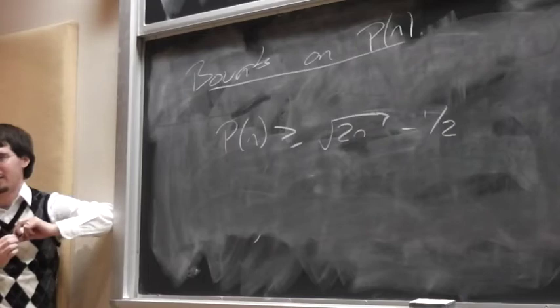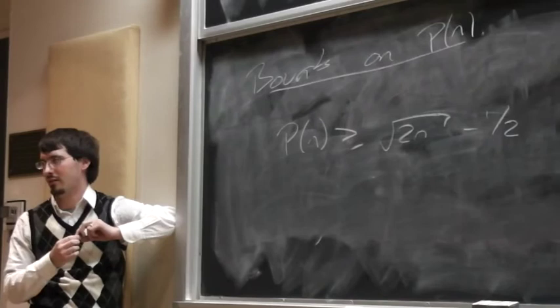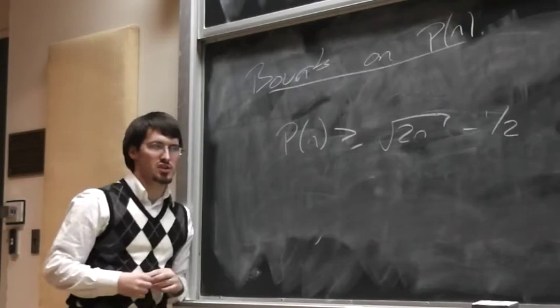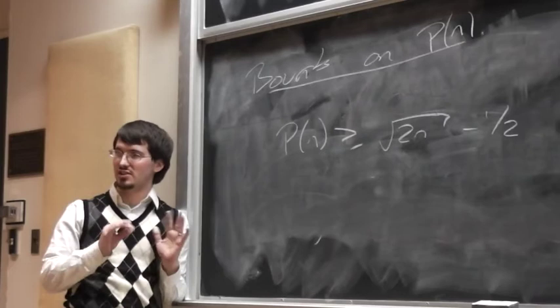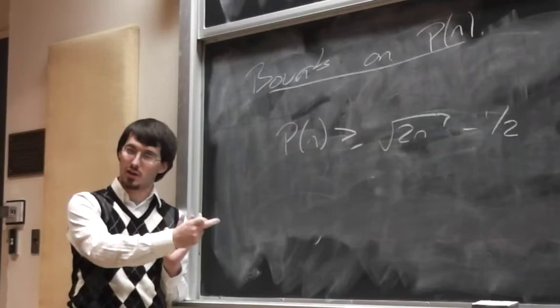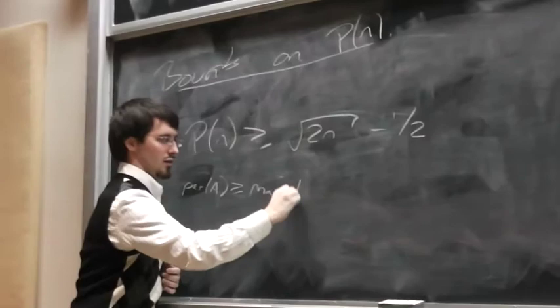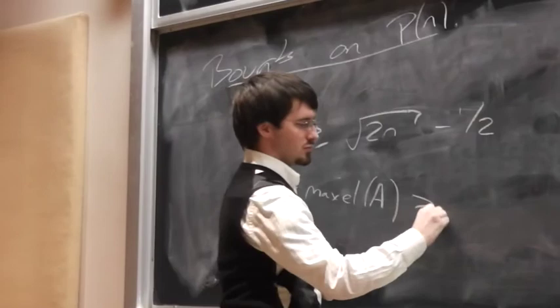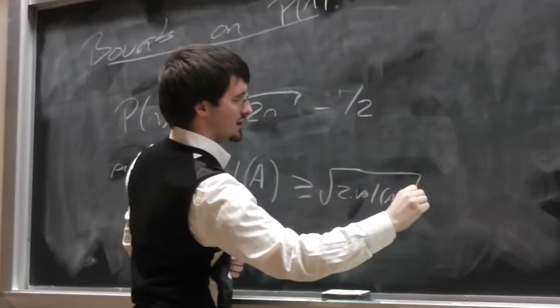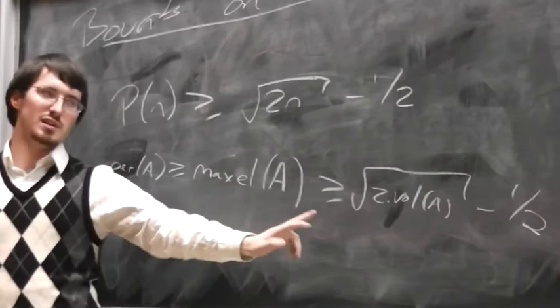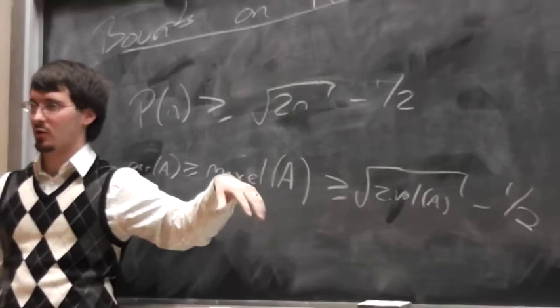No matter what, your P(n) is going to be bigger than or equal to square root of 2n minus a half. Why? You could streamline that thought: the maximum element of our set, whatever our set is, needs to contribute to the perimeter because the element that's bigger than it isn't in the set because it's maximum. So the perimeter of A is bigger than or equal to the max element of A, which is bigger than or equal to square root of 2 times the volume of A. The perimeter is bigger than the maximum element, which is for sure true, and the maximum element is bigger than or equal to this because if you went zero to maximum element, you would get that. So we got a lower bound, cool.